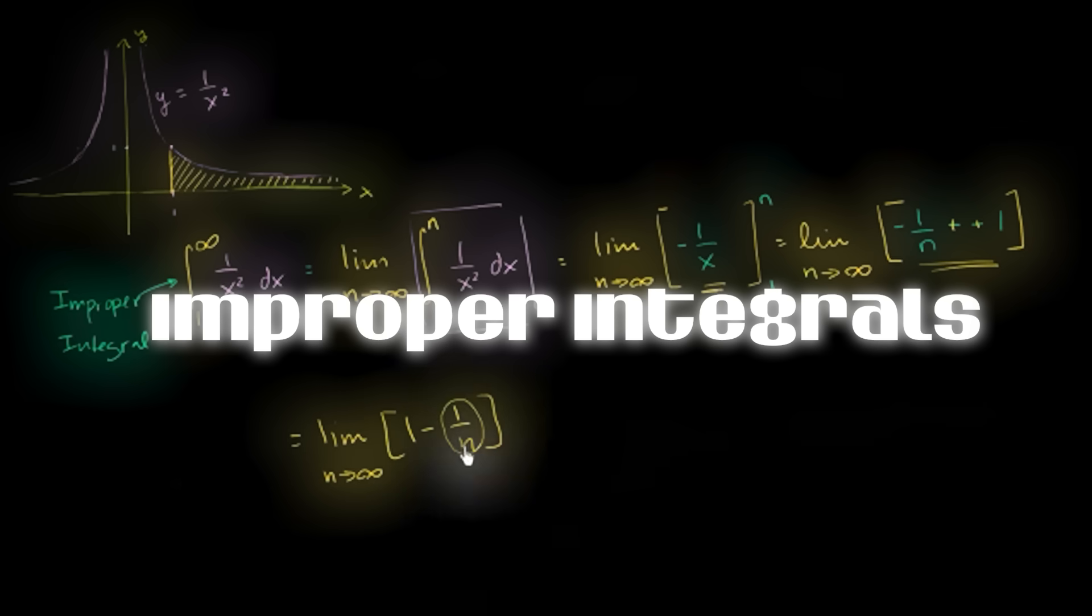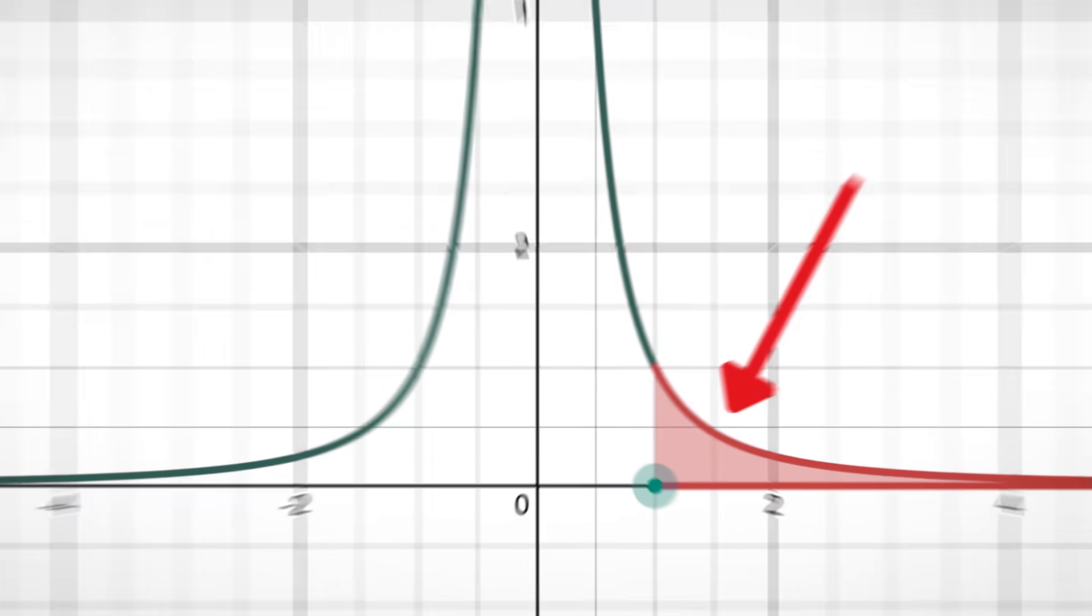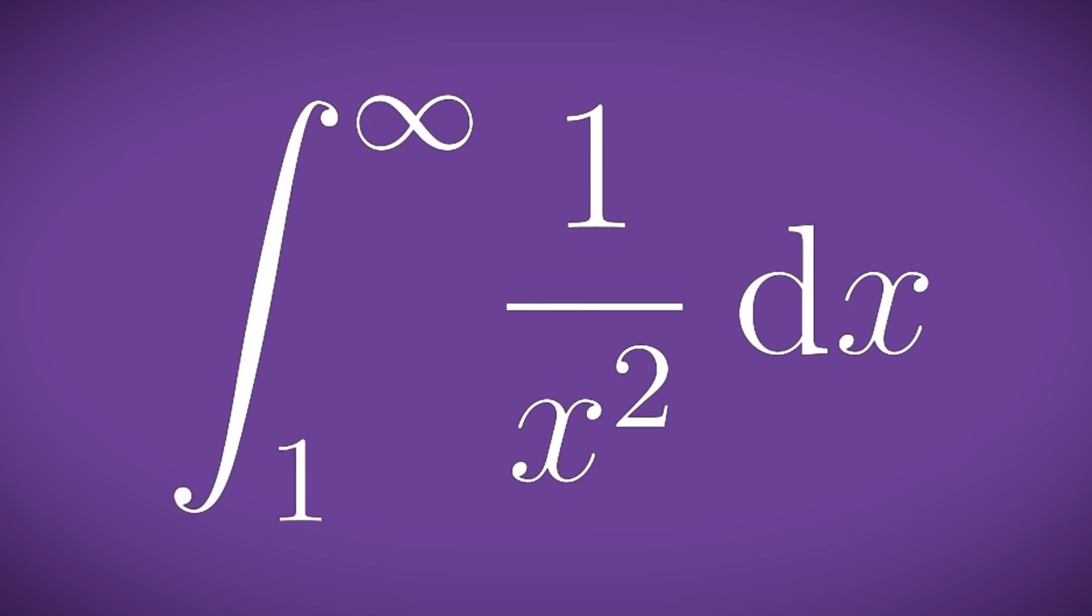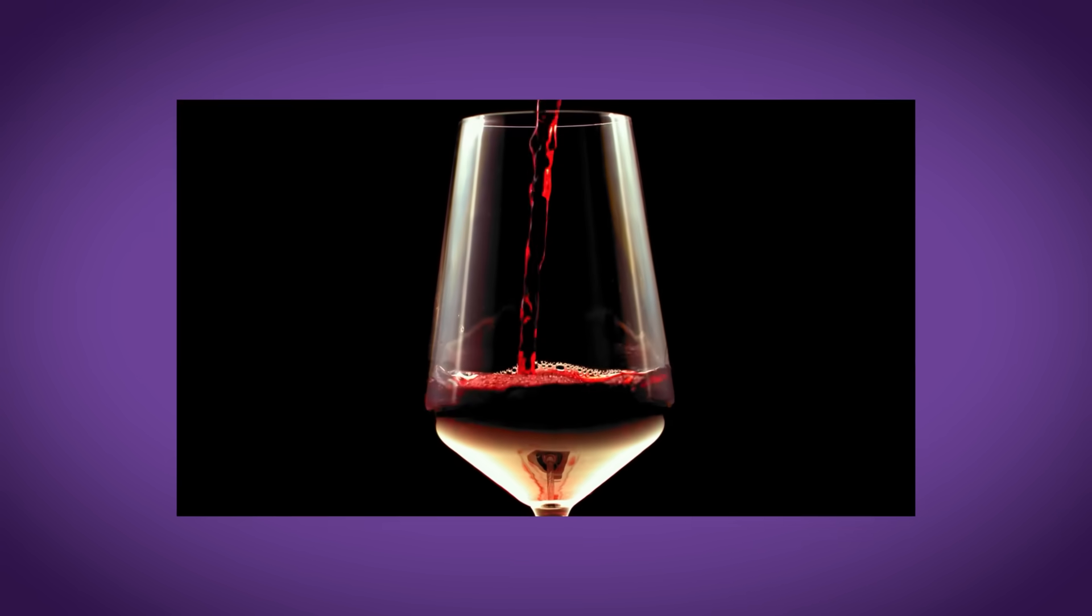3. Improper integrals. But what about if you have a function like 1 over x squared and you want to know the area under the curve from 1 to infinity. Well you can't just go about sticking infinity into the upper limit because that's just improper. It's a bit like sticking fine wine into a polystyrene cup.